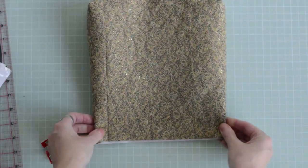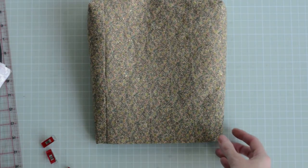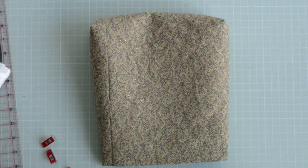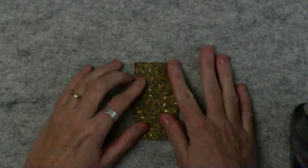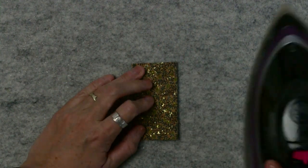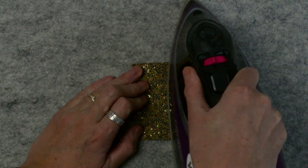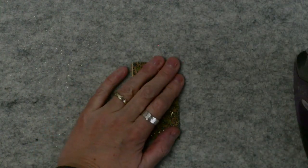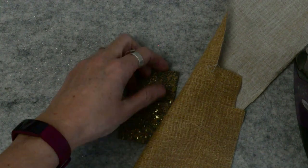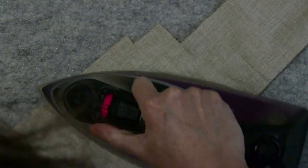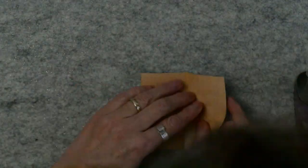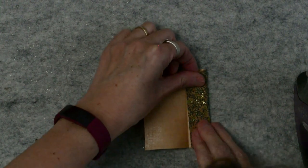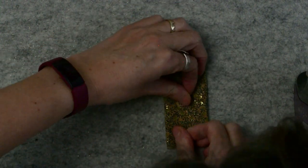So now we're going to create mini straps to attach D-rings to the back of the bag. I'm pressing my cork pieces, as per the pattern, in half. I'm just going to use some cotton here to protect the iron. And then fold, open out and fold in the outer edges to that crease you just made in the middle.